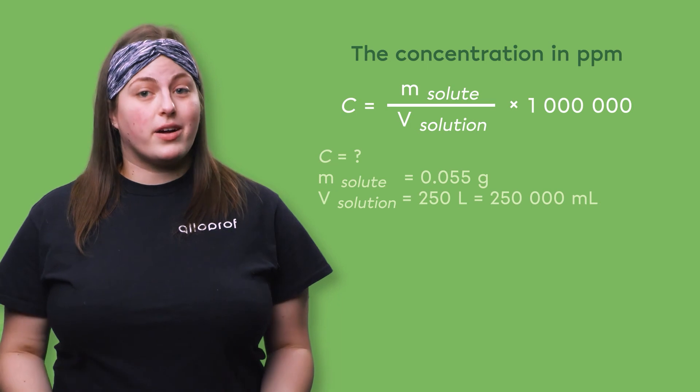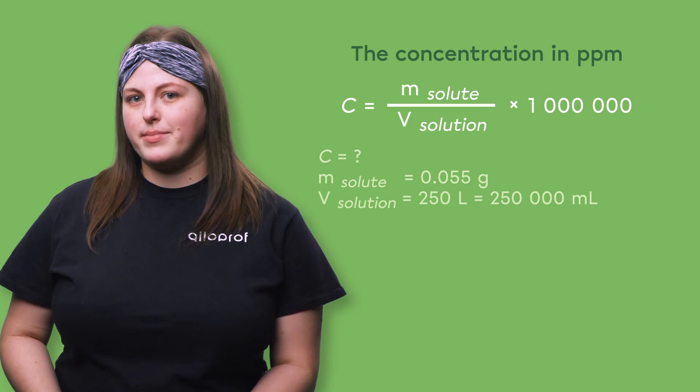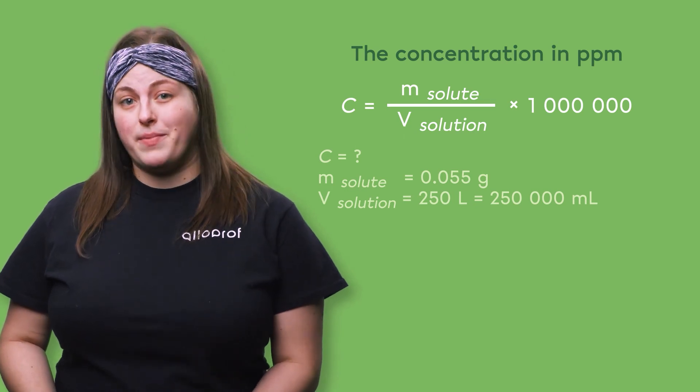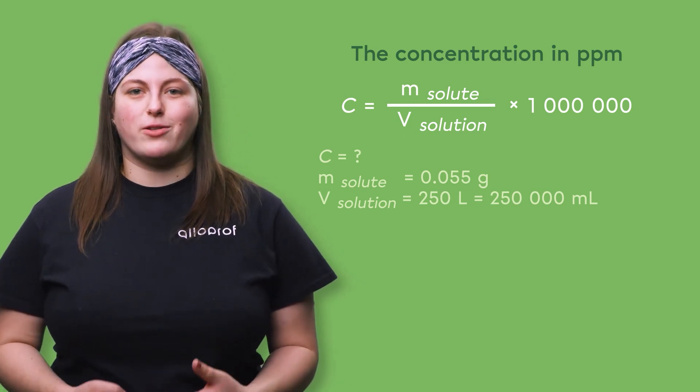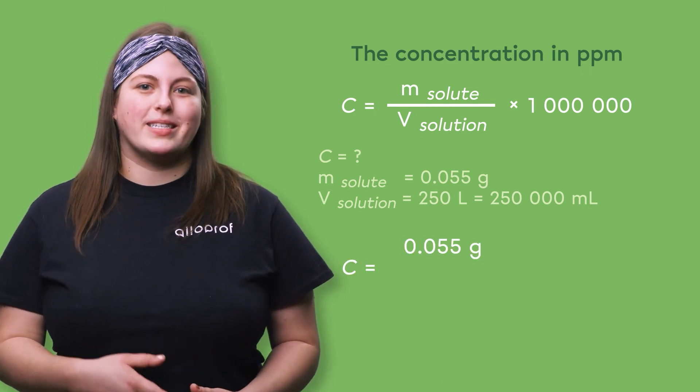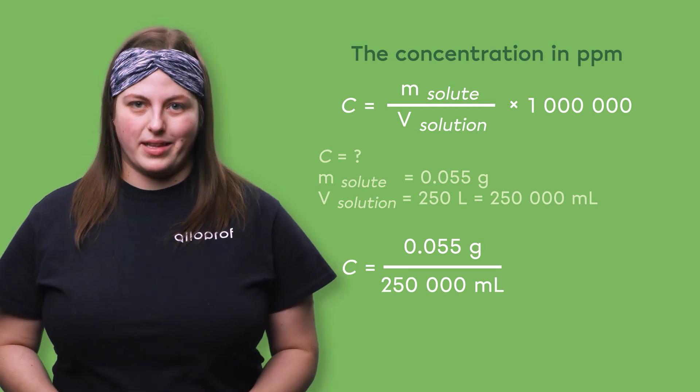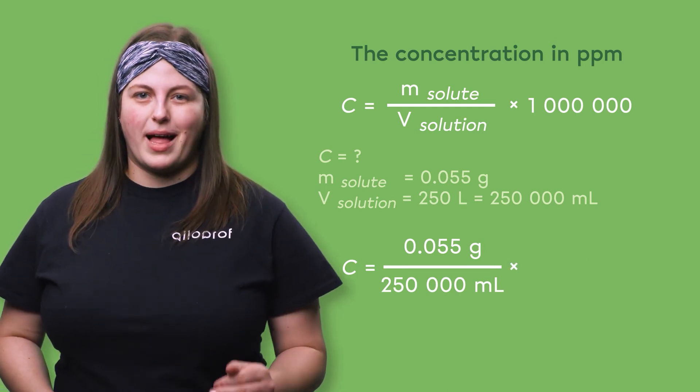We want to find the concentration. The mass of the solute is 0.055 grams, and the volume of the solution is 250,000 milliliters. So we divide 0.055 grams by 250,000 milliliters, and then multiply by 1 million.